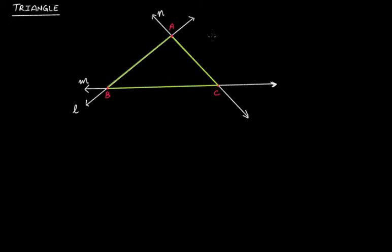It's a simple closed curve, it's a polygon, and it's a triangle. A triangle is the most basic or most simple type of polygon, having three sides and three vertices. If a polygon has three sides, then that polygon is a triangle. AB, BC, and CA are the three line segments forming a simple closed curve.